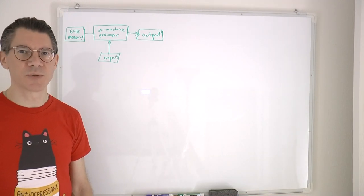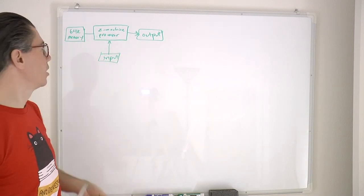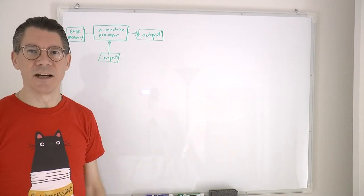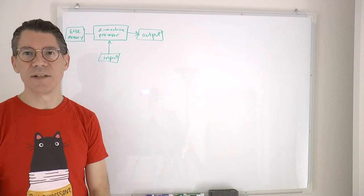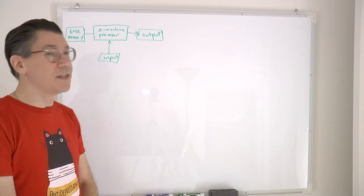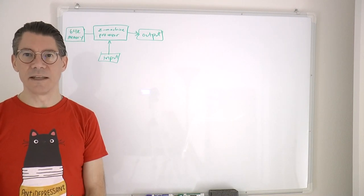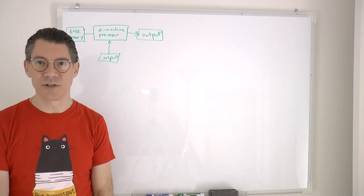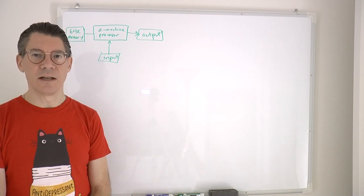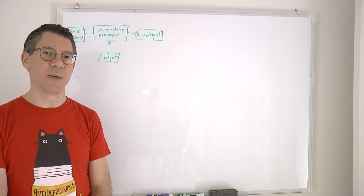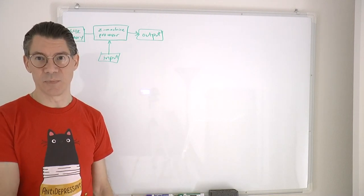At its core, the Z Machine looks pretty much like any other CPU. It has a core processor, input and output, and memory. In this case, the memory was limited to 64k, making this a 16-bit addressing machine, and the input and output are text only. The interior of the processor is also 16 bits — its registers are all 16 bits wide. However, the memory itself is byte-oriented, so you can access any byte of memory. If you wanted to load a register, you would have to load the first byte and then the second byte.